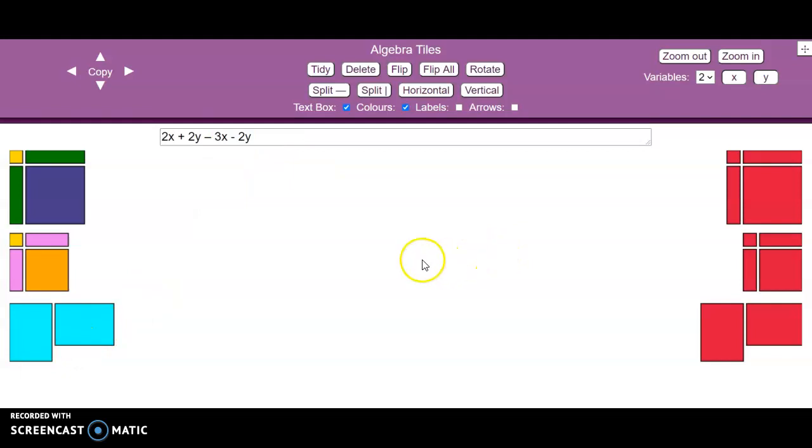And finally, we have got a mixture of x's and y's. So, 2x, and we've got 2y's. And we're going to add 3 negative x's. So there we go, 1, 2. Could use the copy function, actually. 3, and 2 negative y's.